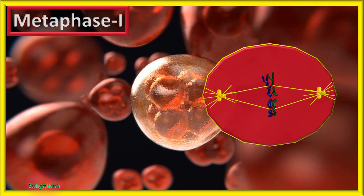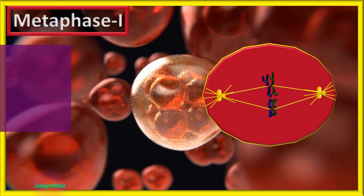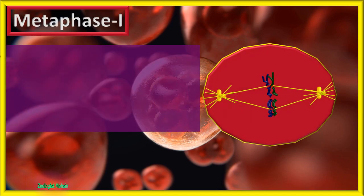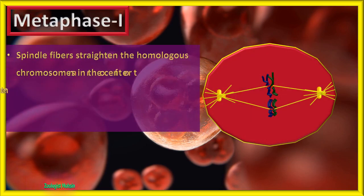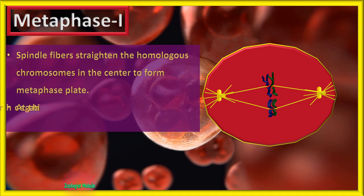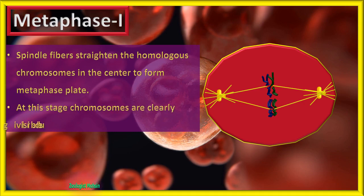Now let's move to metaphase 1. Spindle fibers straighten the homologous chromosomes in the center to form the metaphase plate. At this stage, chromosomes are clearly visible under the light microscope.